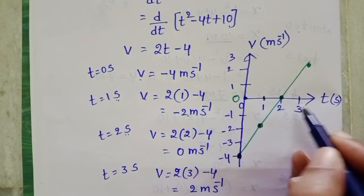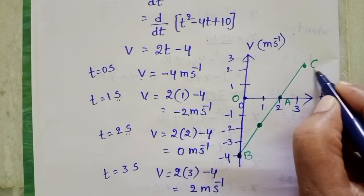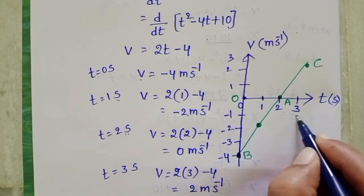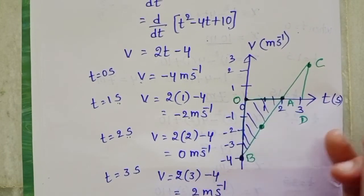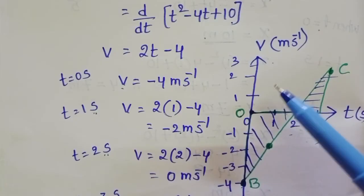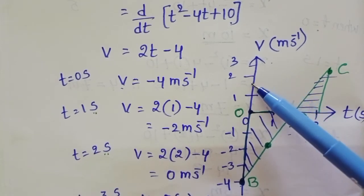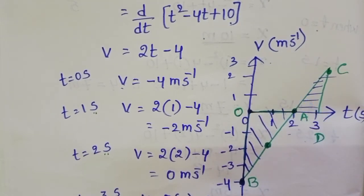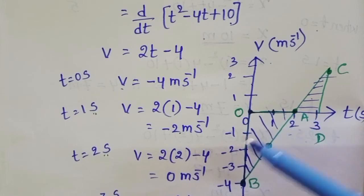Label the graph points O, A, B, C, and D. The area of the velocity-time graph gives the displacement, and the magnitude of the area gives the distance. Using this graph, first find displacement, then distance.